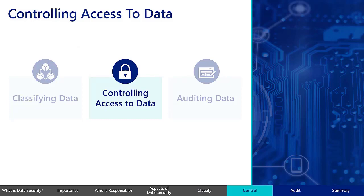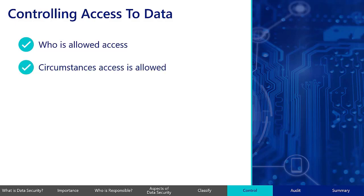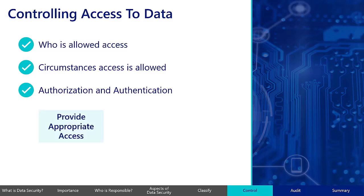Once data is classified, access to it can be properly controlled. Data access control is a process of determining who is allowed access to certain organizational data and under what circumstances that access is allowed. Using techniques such as authorization and authentication, data access controls make sure the appropriate people can access the data they need and prevent unauthorized users from gaining access to sensitive, confidential, or regulated data. All data users in Texas state agencies and institutions of higher education are responsible for protecting data from unauthorized access, no matter what their role is within the organization.